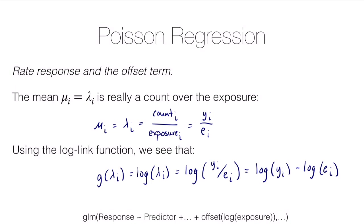The exposure terms ei are known — you will know how long you observed an individual or how large a plot of land you studied. Since they are known, we can move them to the right-hand side of the model as the systematic part, and we call this an offset term. In R, using the glm function, you specify: response ~ predictors + offset(log(exposure)), and we'll have a lesson with real data detailing this implementation.